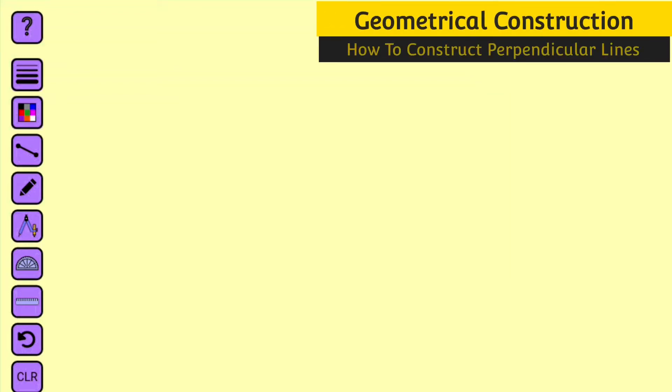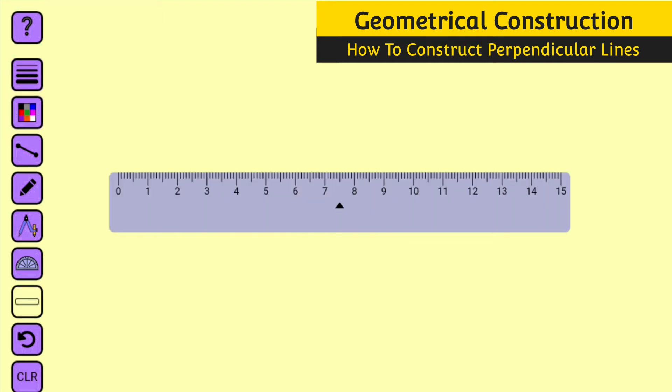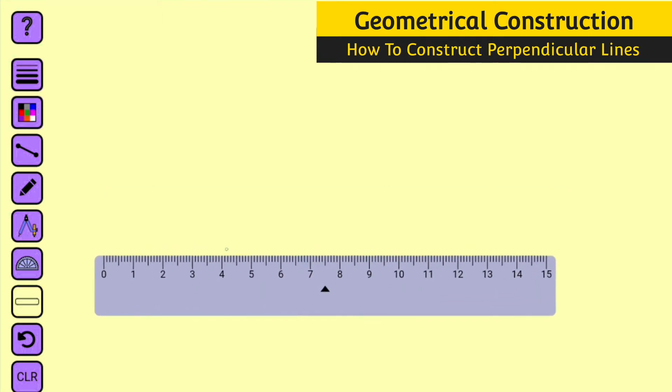Hello, good day viewers. In this tutorial I'm going to show you how to construct perpendicular lines. Two lines are said to be perpendicular to each other if they intersect at 90 degrees. So the first thing you need to do is to use your ruler and construct a straight line — this is my ruler and this is a straight line.